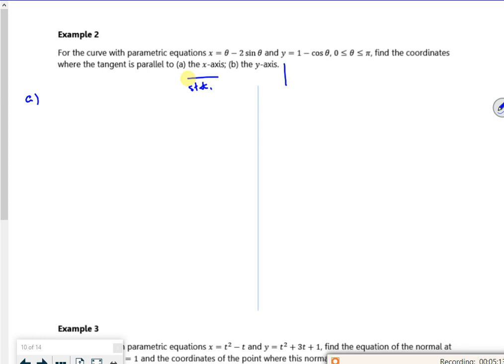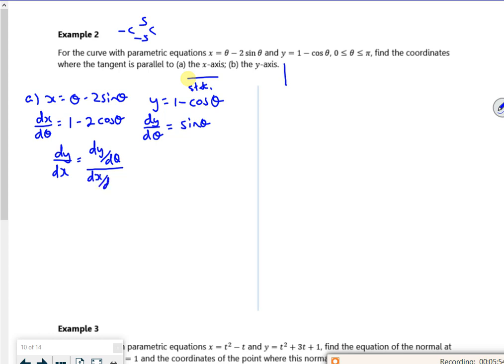Right, so let's differentiate first. So if I've got x is theta minus 2 sin theta, sin goes to cos, minus stays minus, cos. So dx by d theta is 1 minus 2 cos theta. And y is 1 minus cos theta. So that when 1 disappears, the minus cos becomes sin theta. So dy by d theta is sin theta. So dy by dx is sin theta over 1 minus 2 cos theta.